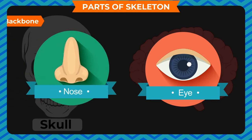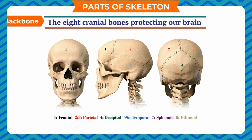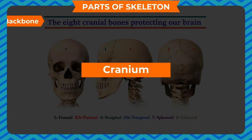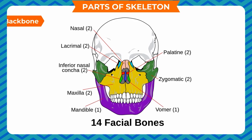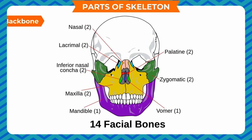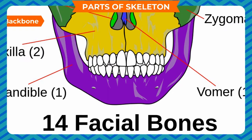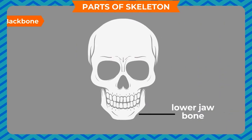The upper part of the skull is made up of eight flat bones joined together, called the cranium. The face and jaw contain 14 bones, collectively called facial bones. Our teeth are fixed to the jaw bones. The lower jaw bone is the only movable bone in the skull, and it enables us to chew our food and talk.